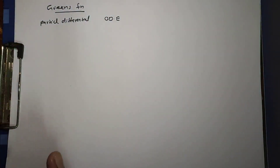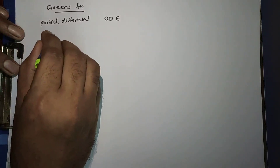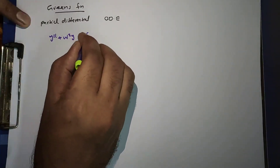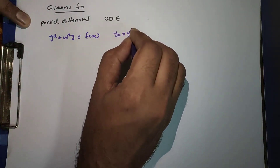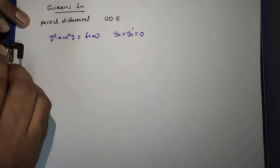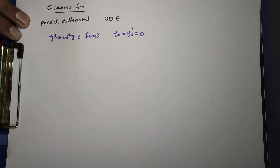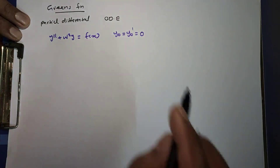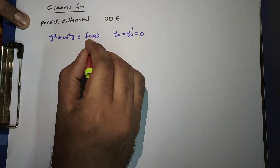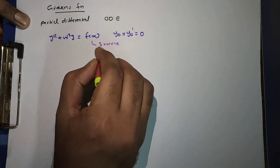First, we will do an example of how we use Green's function to solve a differential equation. Consider the differential equation: y double prime plus omega squared y is equal to f of x. We have two boundary conditions: y(0) is equal to 0 and y prime(0) is equal to 0. Here, f of x is called the source function or forcing function.